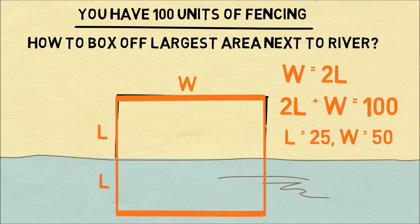And we know the perimeter is 2L plus W equals 100. So we can easily solve that the length is equal to 25 and the width is 50 so the area is 1,250. So that's the geometric solution and it's quite elegant.